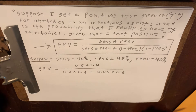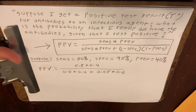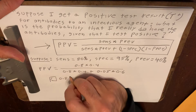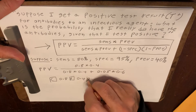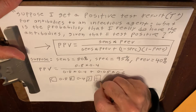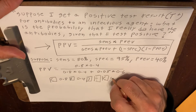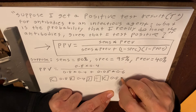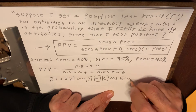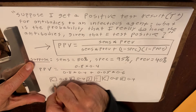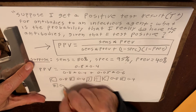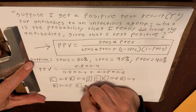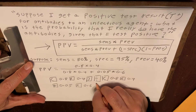So how do you actually do this on the calculator? You would take the open parenthesis key and type 0.8, then the times button, then 0.4, then the closed parenthesis key, then the divided by button, then another open parenthesis key, then 0.8, then the times button, then 0.4, then the plus button, then 0.05, then the times button, then 0.6, then the closed parenthesis key.